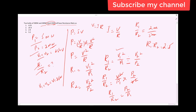The answer is option C — the ratio R1 to R2 is 2:5. That is how we solve this problem.